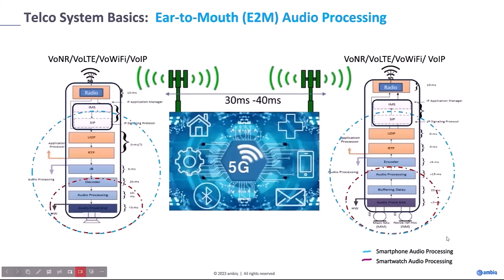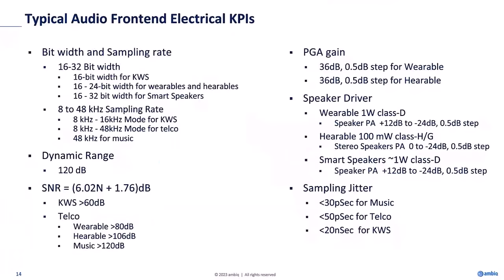The total mouth-to-ear latency requirement based on ITU G.114 is 150 milliseconds. The network has a budget of 30 to 40 milliseconds. Because these are packet-based systems, the network cannot exceed more than 50 milliseconds each endpoint. Adding the air interface: 50 ms + 50 ms plus air interface and network processing gives roughly 50 milliseconds as the network budget. In terms of key audio front-end KPIs, these include bit width and sampling rate — 16 to 32 bit width and 8 to 48 kHz sampling rate depending on use case.